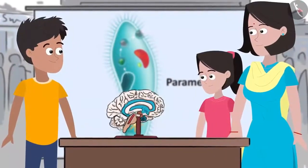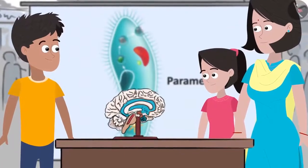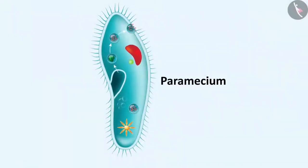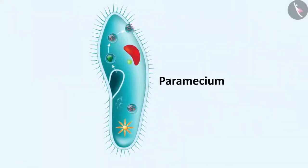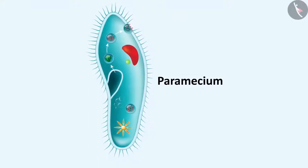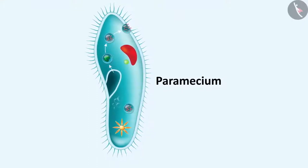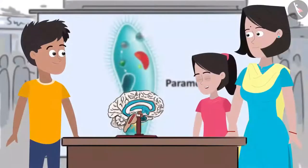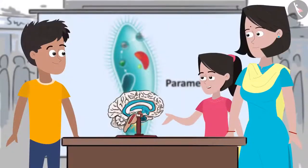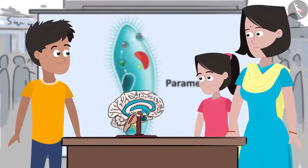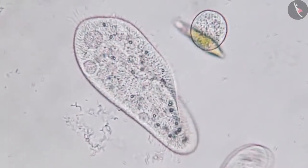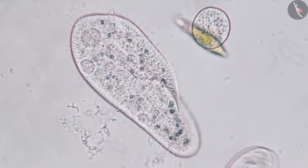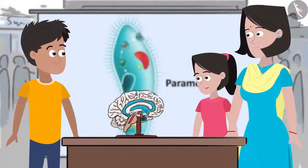On one of the posters at Bhaiya's stall, Sanya observed a shoe-like structure labelled as paramecium. Look Bhaiya, this organism looks like a shoe. Yes, this is paramecium, a unicellular organism. Unicellular organism?